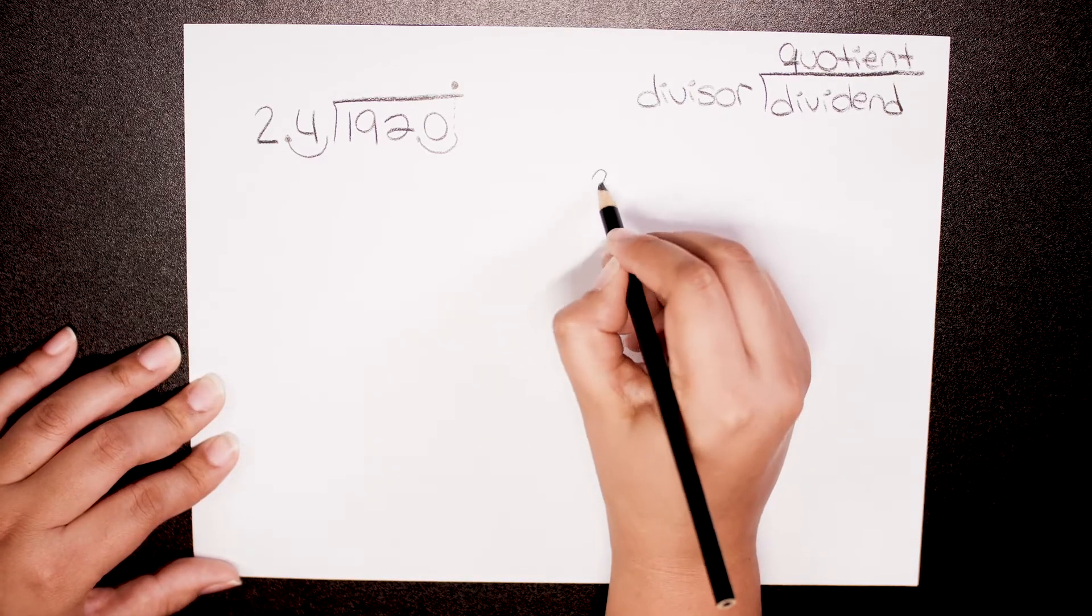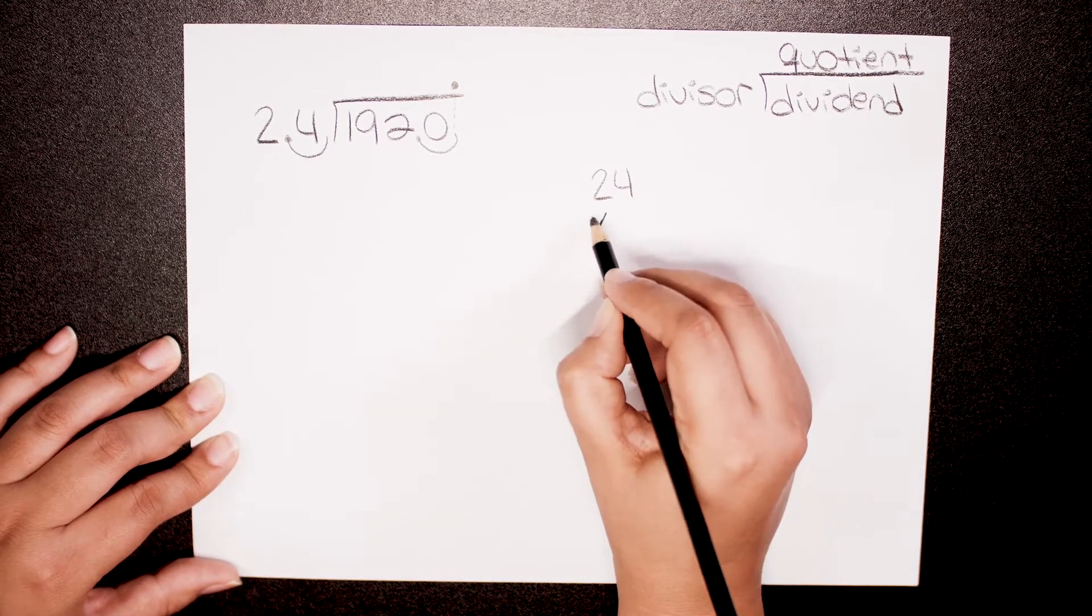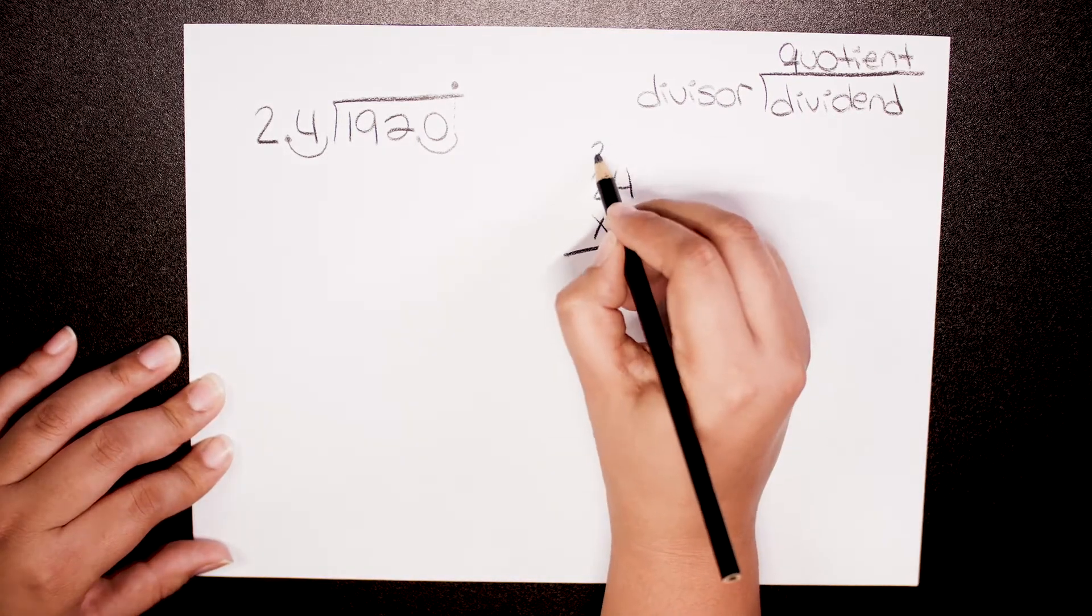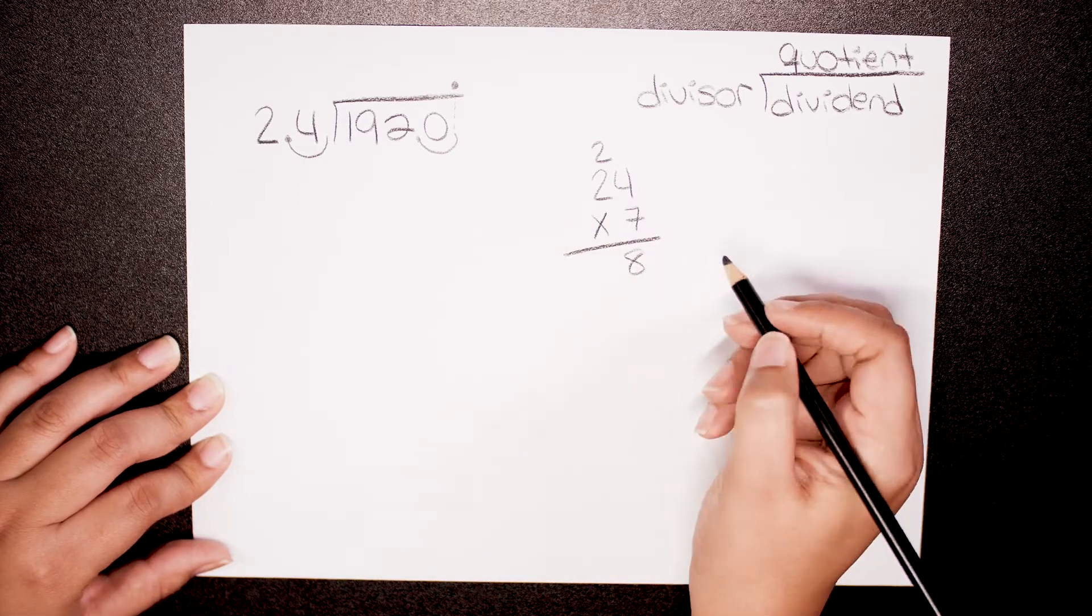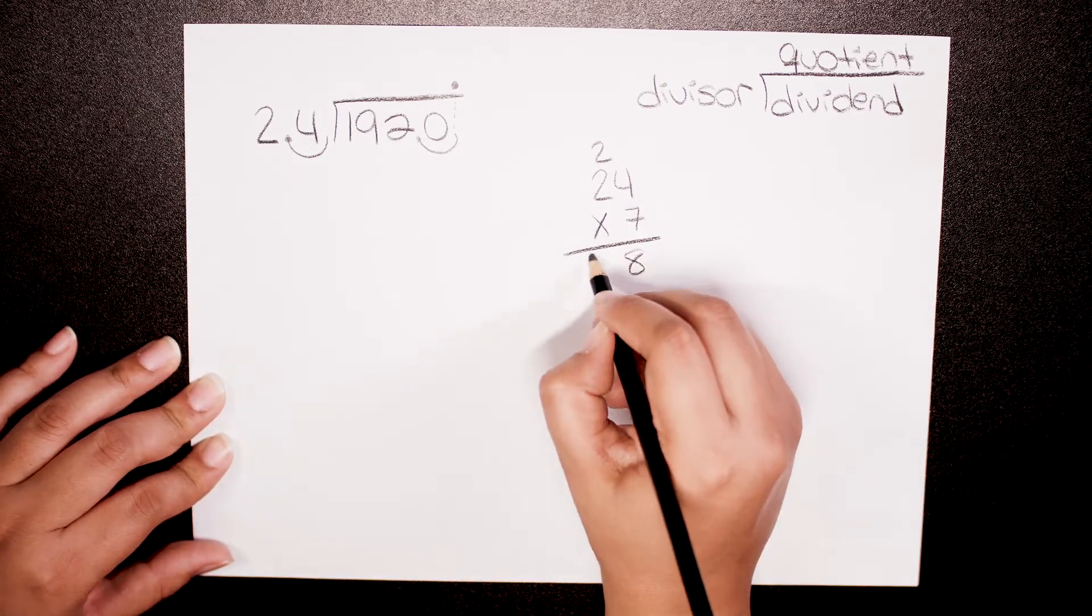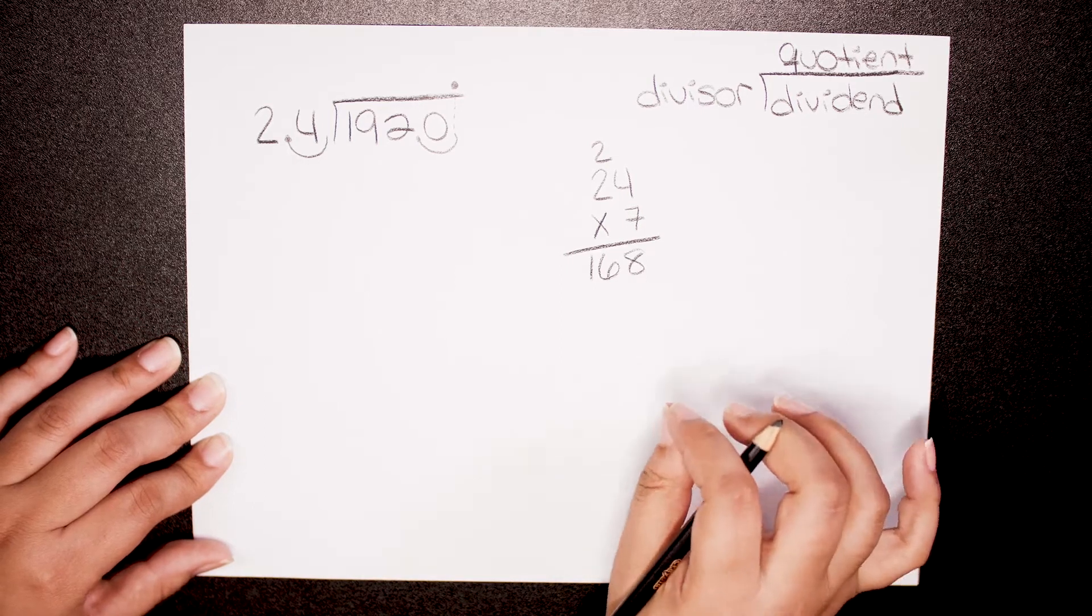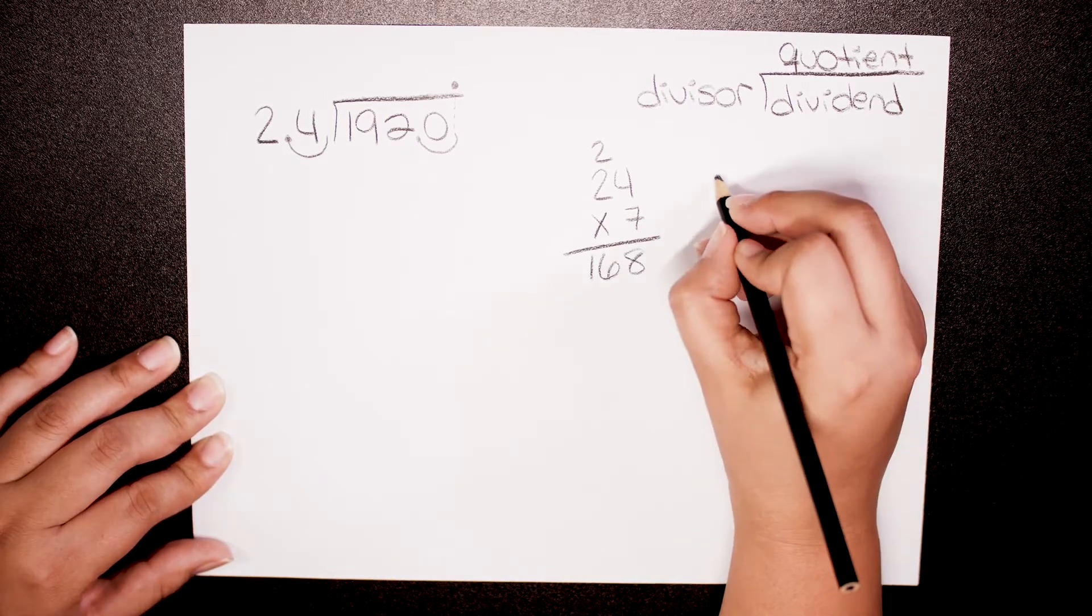24 times 7: 7 times 4 is 28, 7 times 2 is 14 plus 2 is 16. It's a little close but not that much. How about we try with 8?